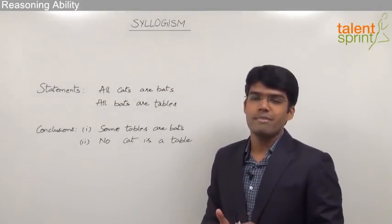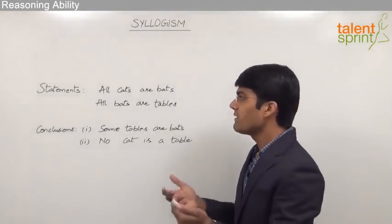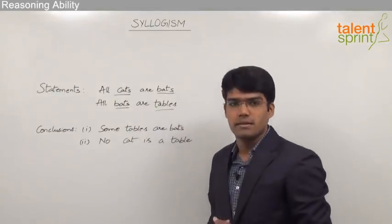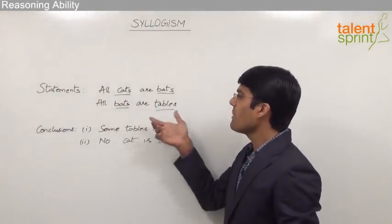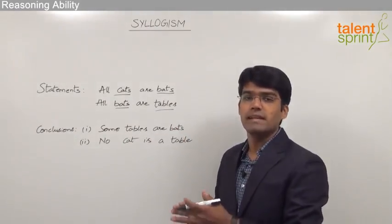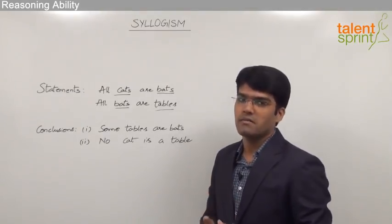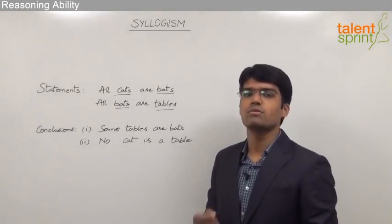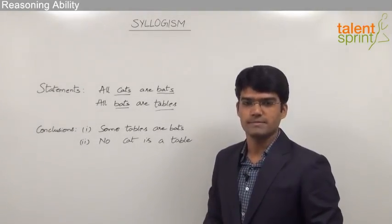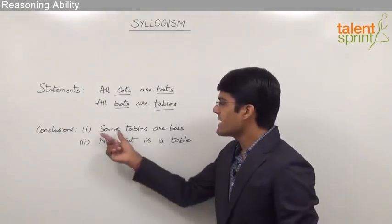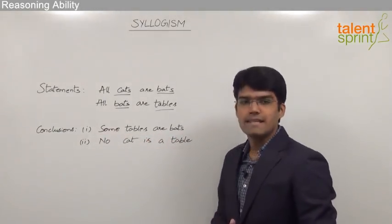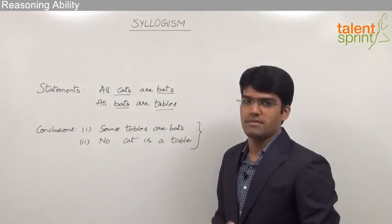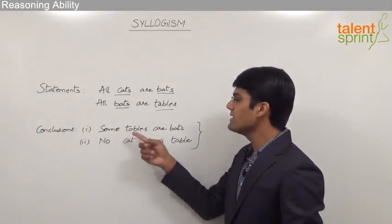The statements may vary from the commonly known facts. For example, in real life there is no relationship between a cat and a bat, and similarly there is no relationship between a bat and a table. But the statements say all cats are bats and all bats are tables. Though they seem completely at odds with commonly known facts, we have to assume the given statements are true. The given conclusions are: some tables are bats, and the second conclusion is no cat is a table. We are now supposed to check which of these two conclusions follow with respect to the given statements.